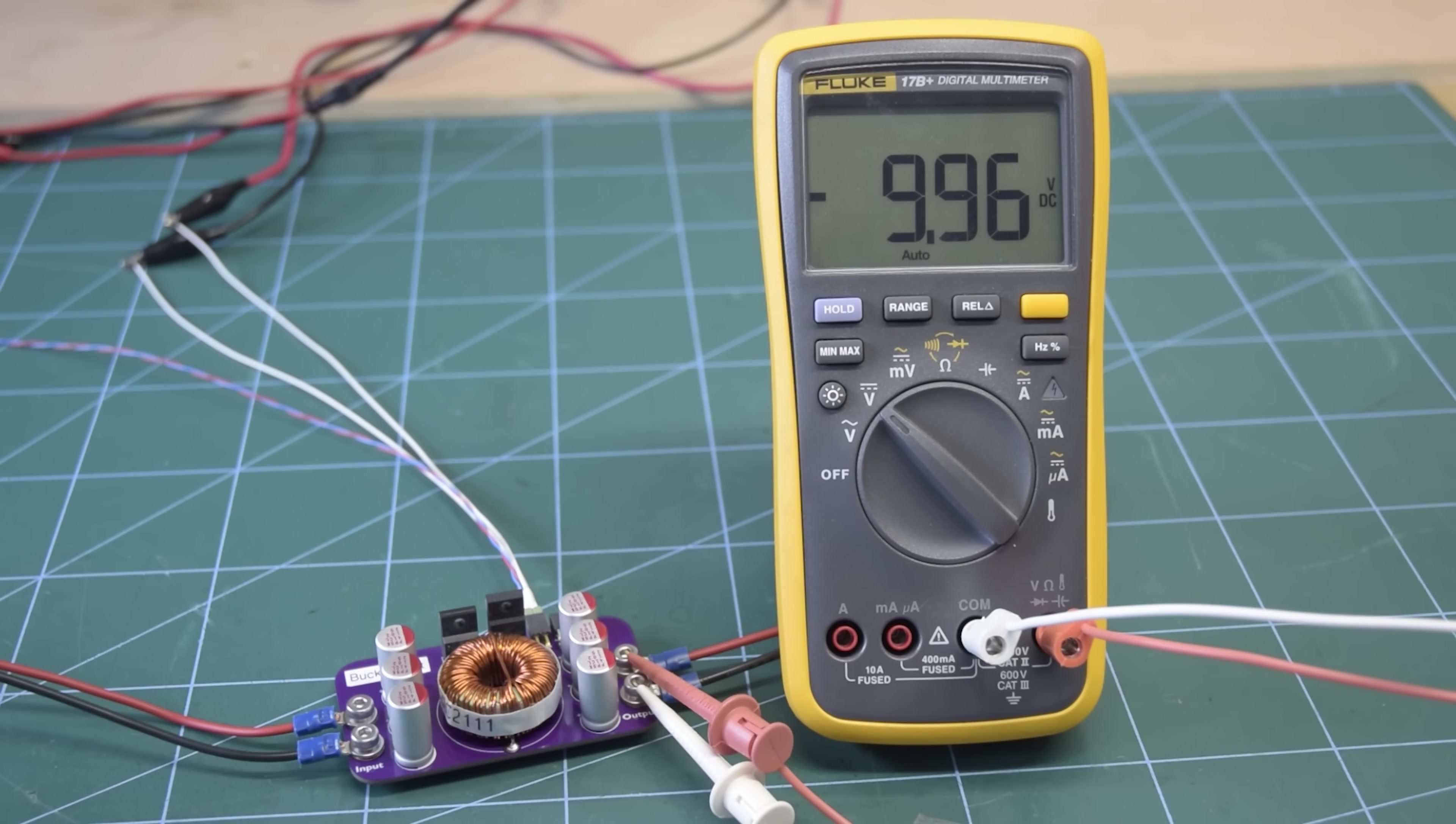And at 50% duty cycle, we've got pretty much identical input and output voltage. Increasing or decreasing the duty cycle will increase or decrease the output voltage respectively. Which shows that the buck boost is the only of the three topologies capable of both increasing and decreasing the output voltage relative to the input. Though of course, it flips it over so it's only so useful.